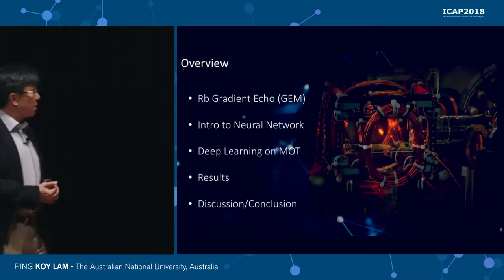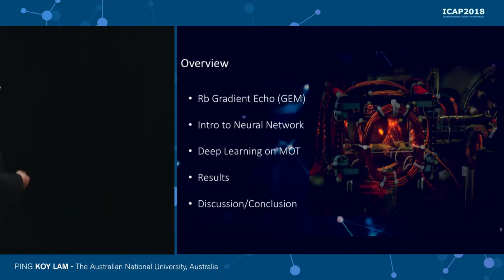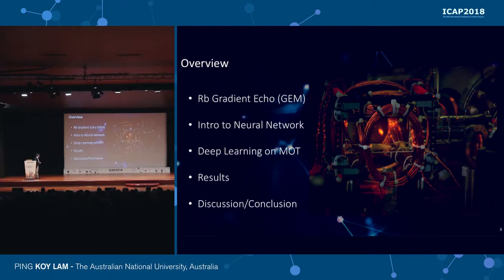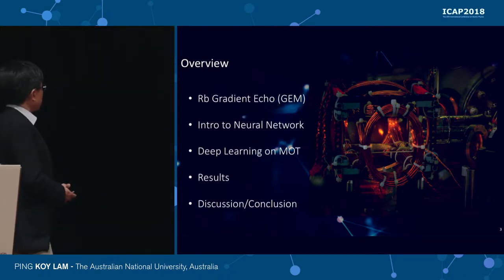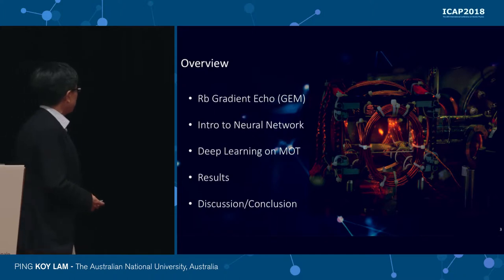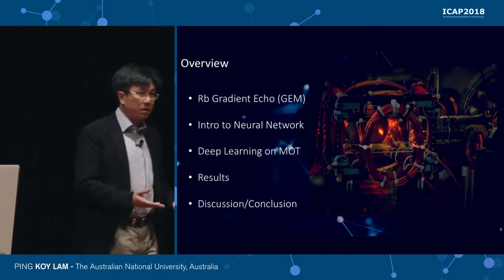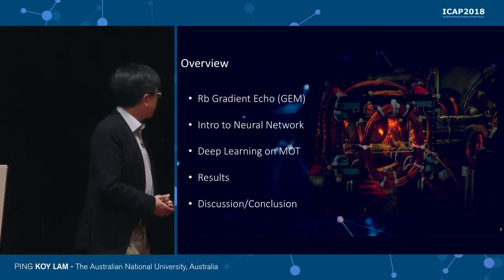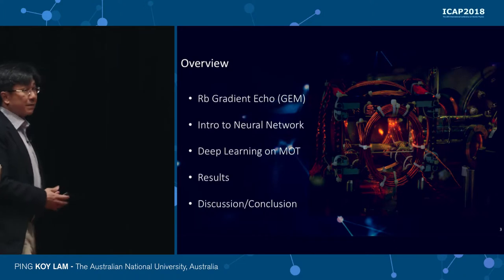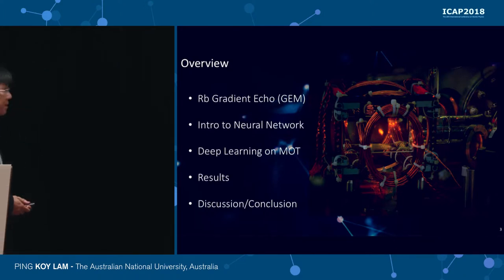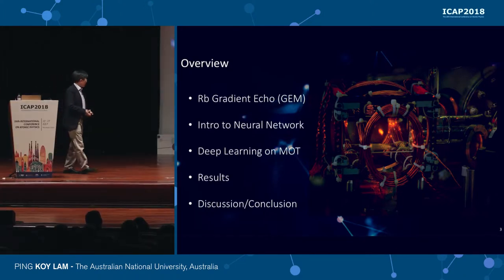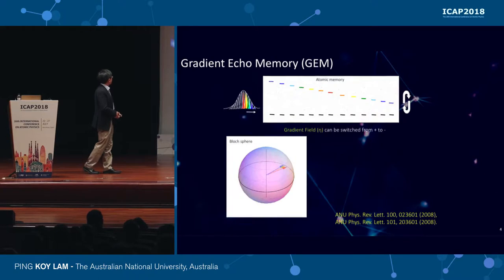The overview of my talk: I'm going to give a really quick description of our rubidium magneto-optical trap that is used for gradient echo memory. Then I'll introduce neural networks and show how we implement deep learning on our magneto-optical trap, show you some results, and hopefully we have time for some discussion and conclusion.